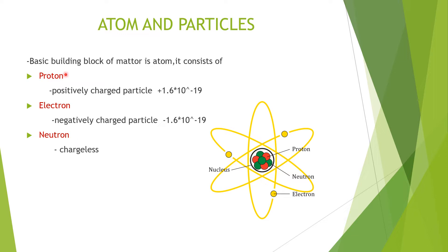The nucleus is the center of the atom and it consists of protons and neutrons. Proton is the positively charged particle. Its charge is plus 1.6 × 10⁻¹⁹ Coulombs, and the proton was discovered by Ernest Rutherford.